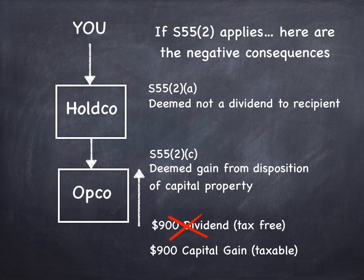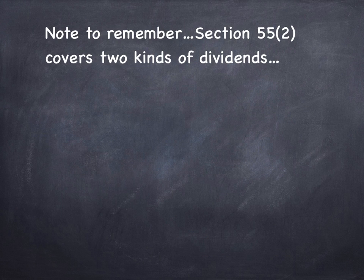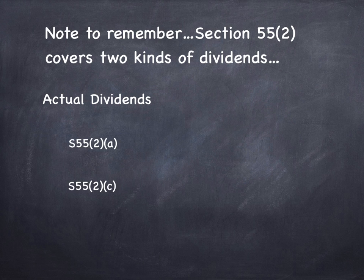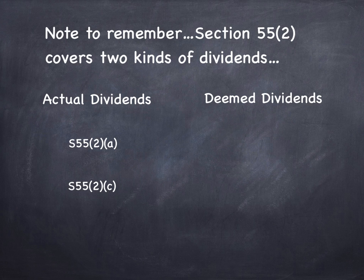Now, hang on a second. We have 55.2(a) and 55.2(c) — why did I take out B? Let me explain. Section 55.2 covers two different kinds of dividends. Number one, there are actual dividends — cash dividends. Stock dividends are also covered in this section, but let's keep it simple. If the OpCo pays an actual dividend to the HoldCo, 55.2(a) says it's not a dividend to the recipient, and 55.2(c) says it's a capital gain. But there's another kind of dividend also covered in Section 55.2, and that's deemed dividends. And that's what 55.2(b) is about.